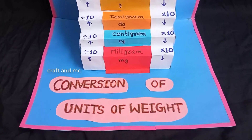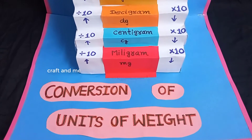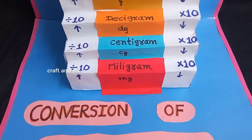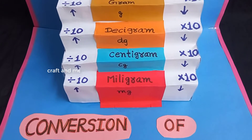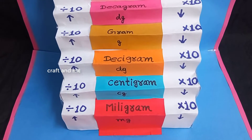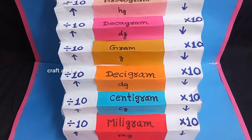When we measure the weight, the standard unit of weight is gram. Kilogram is a larger unit and milligram is a smaller unit of weight.